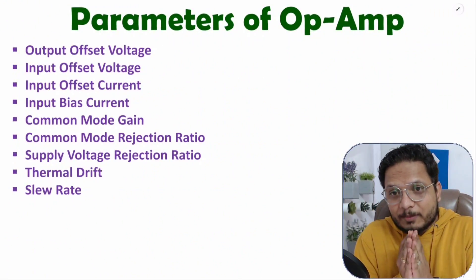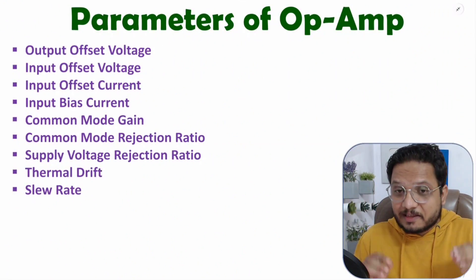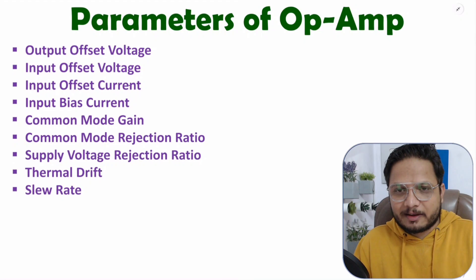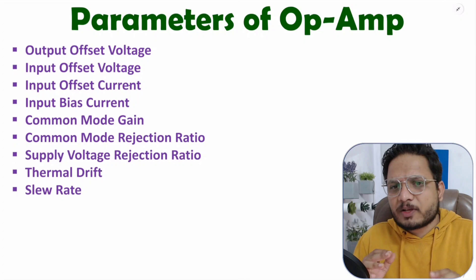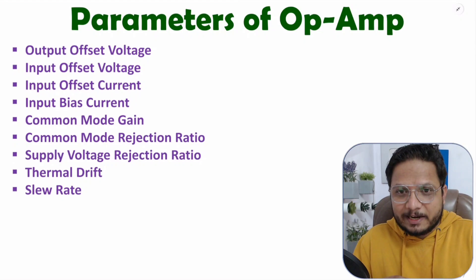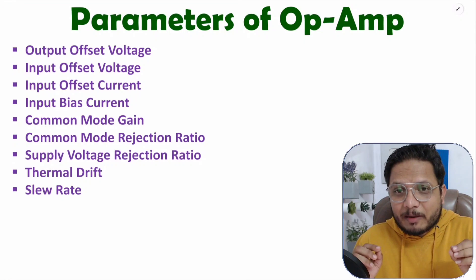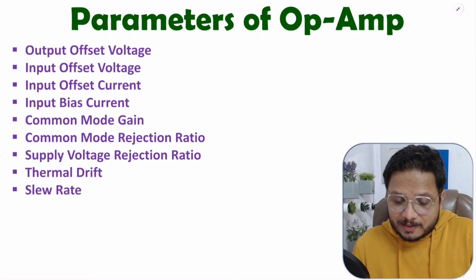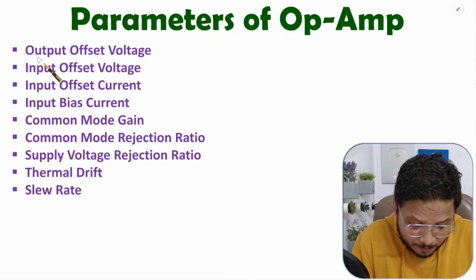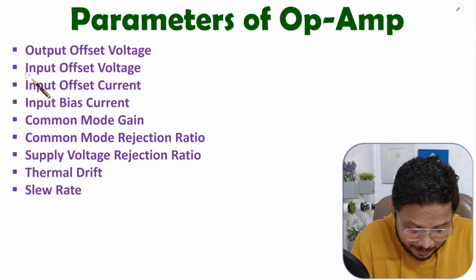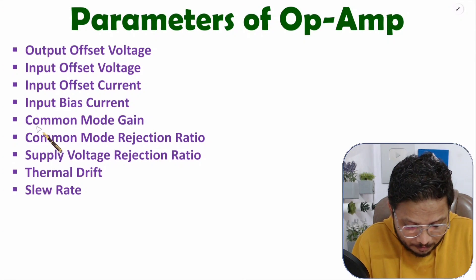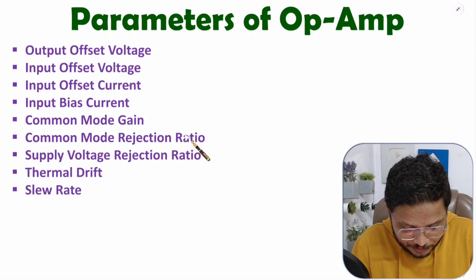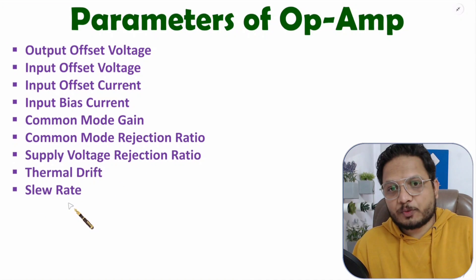Hello friends, welcome to Engineering Fenda family. In this video, I will explain the parameters of operational amplifier in great detail. I will cover output offset voltage, input offset voltage, input offset current, input bias current, common mode gain, common mode rejection ratio, supply voltage rejection ratio, thermal drift, and slew rate.